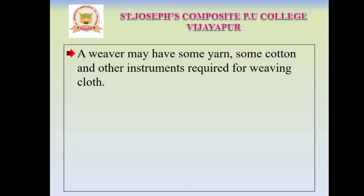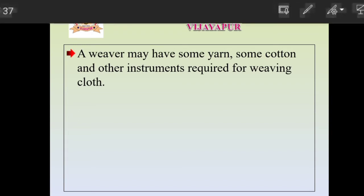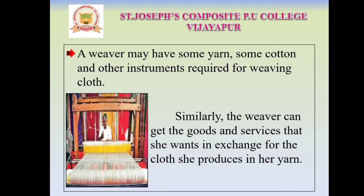Similarly, a weaver may have some yarn, cotton and other instruments required for weaving clothes. These are the resources used by the weaver. The weaver can get the goods and services that she wants in exchange for the clothes she produces using her yarn and cotton. By exchanging the clothes in the market, she earns some amount of money, and in that way she can fulfill her life.